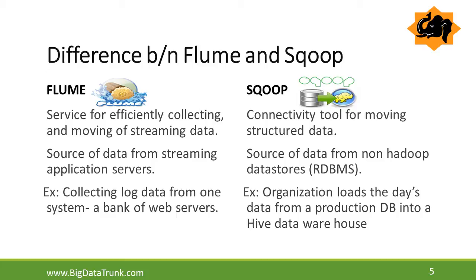Flume is a service for efficiently collecting and moving streaming data. Whereas Sqoop is a command-line connectivity tool for moving structured data. The source of data in Flume is streaming application servers, whereas in Sqoop, the source of data is non-Hadoop data stores, that is relational database management systems.